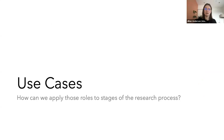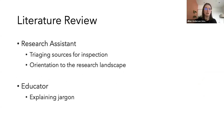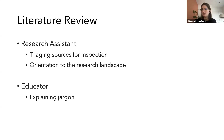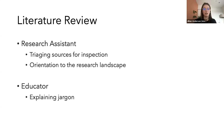Taking these roles, we can apply them to different stages of the research process. For literature review, you can use generative AI in the research assistant role — there are search engines starting to incorporate generative AI natively, triaging sources or papers for you to inspect later, or helping orient a new researcher to the landscape they're entering. You can also use tools in the educator role to help explain jargon, explain concepts, and ask specific questions to understand what's within a paper.